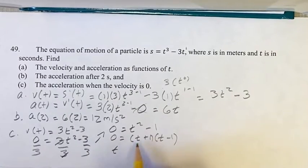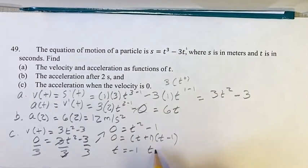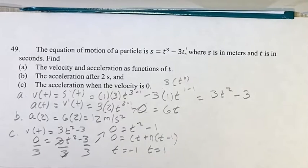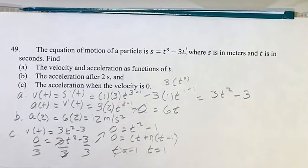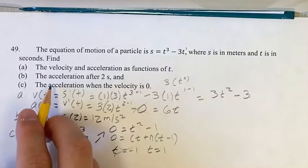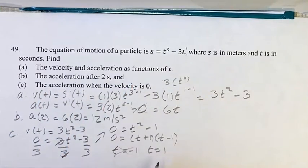And from this, we get that t is equal to negative 1 and t is equal to 1. In this situation, we're going to be looking at positive values, because time cannot be negative. So when t is 1, the velocity is 0. And now we want to find the acceleration when the velocity is 0, so the acceleration when t is equal to 1.